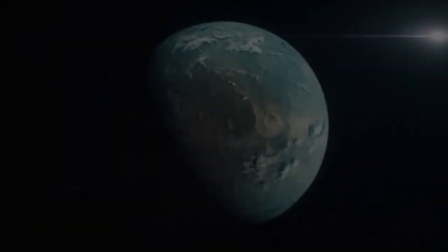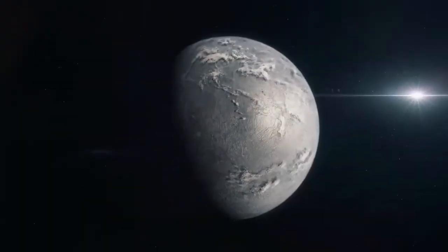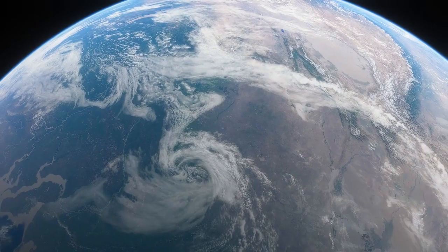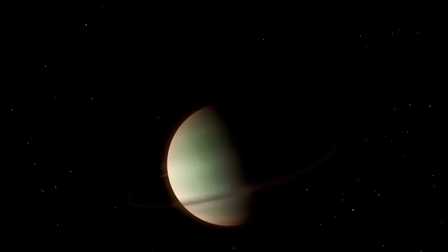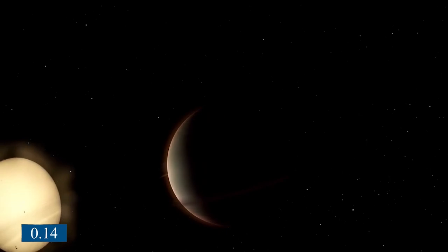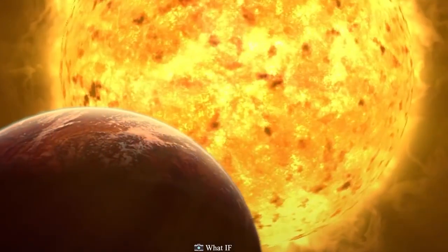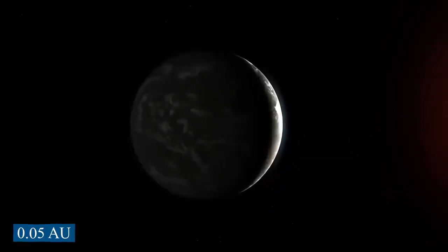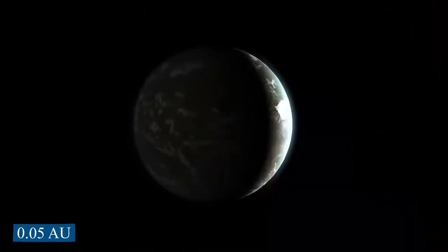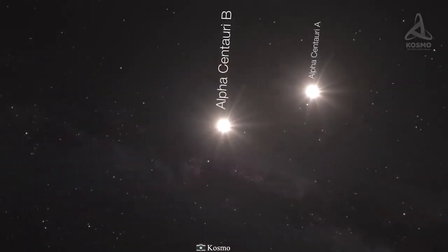The planet is about 1.3 Earths, as well as the size of Proxima Centauri, which is 0.14 times the size of the Sun. We also know that the planet goes around the Sun every 11 days at 0.05 astronomical units. Other things that would affect its light curve would be its albedo and the tilt of its orbit.